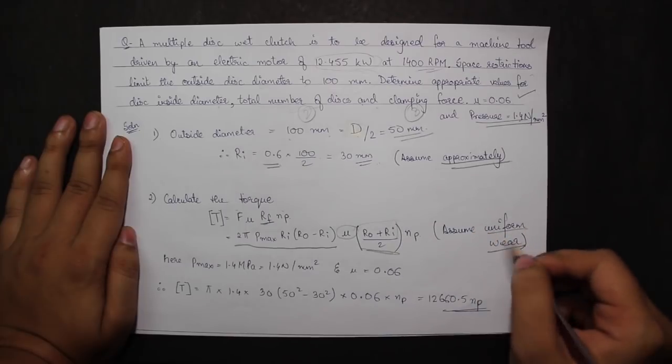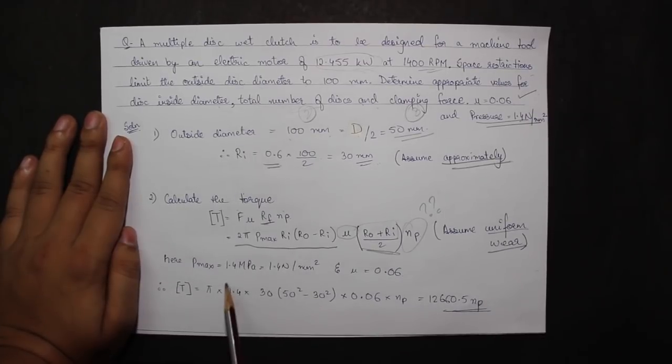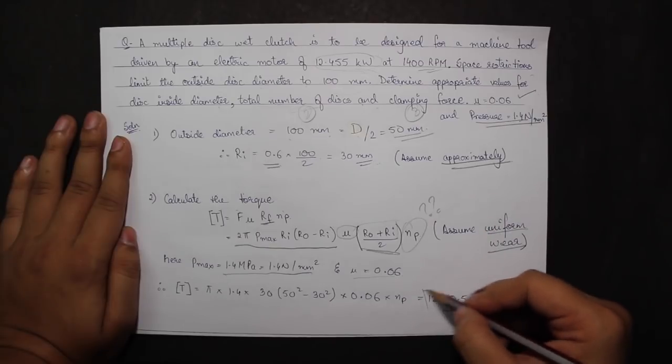Here P max is 1.4 Newton per mm square and mu is 0.06. Therefore my design torque comes out to be 12660.5 NP.